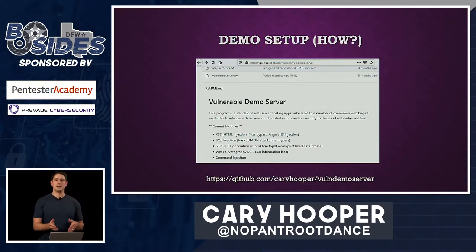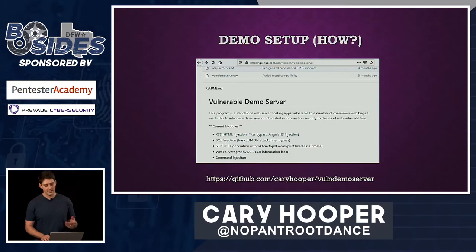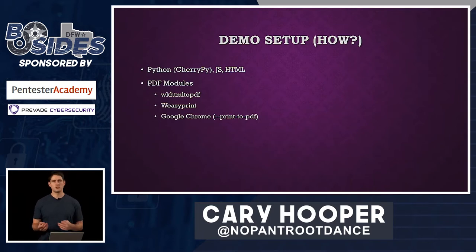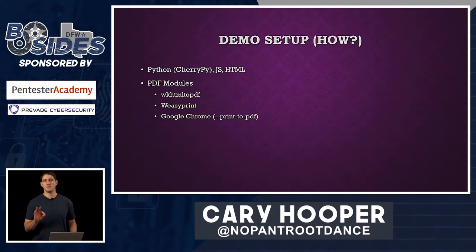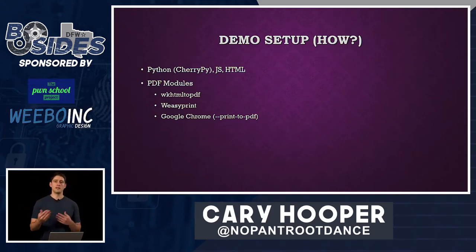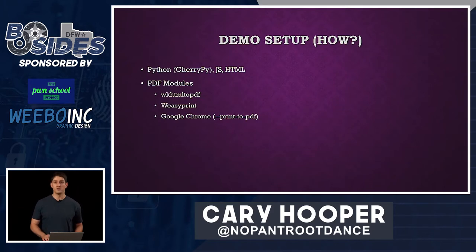So in order for the demonstrations that I'm going to demonstrate today, I built them into this web server. It's on GitHub at the link below, and I'll distribute in the Discord server as well. This is a program written in Python, specifically the CherryPy module. Some JavaScript and HTML in there, but mostly pretty much in Python. There are three PDF modules that were utilized, and we'll get into more of those later. I also built it into a Docker container — it's also on Docker Hub if you'd like to take a look.